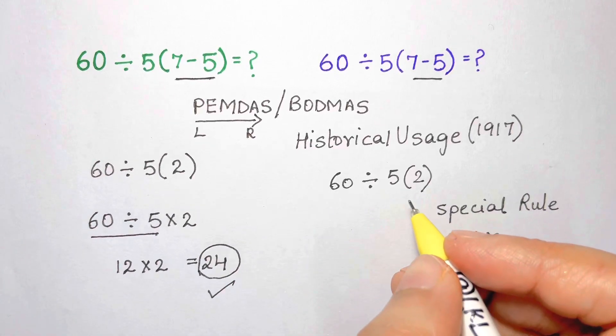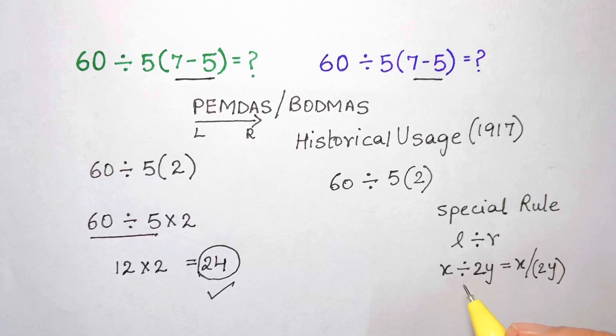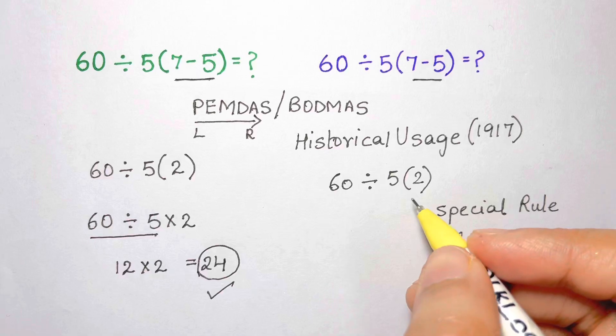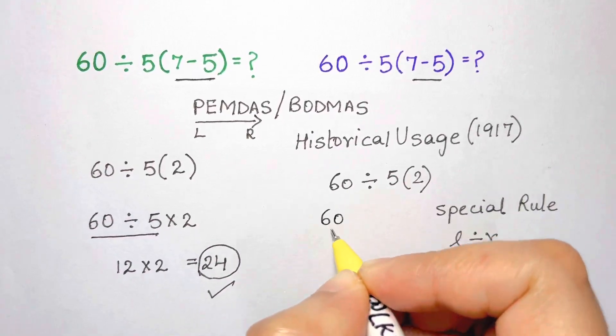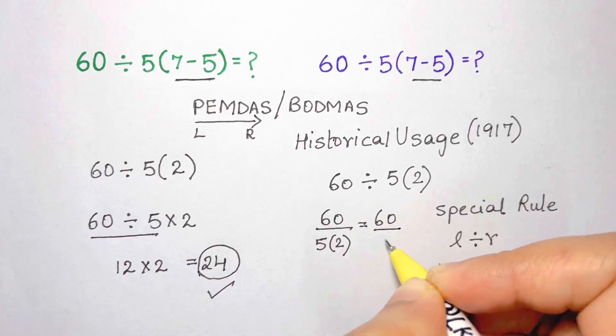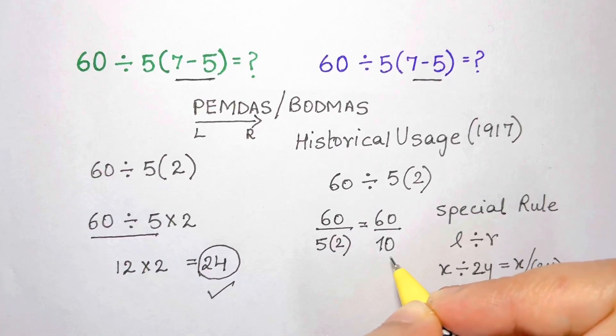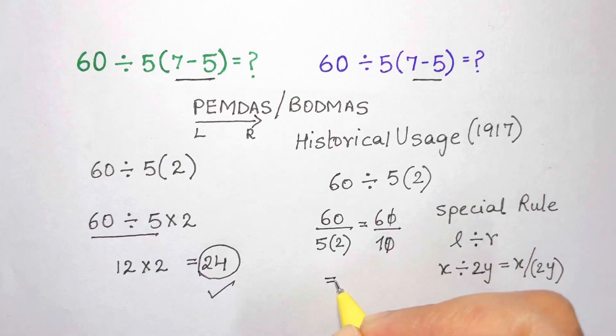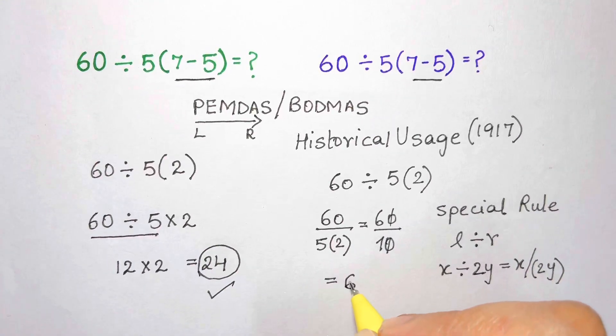If we use this special rule, we would then need to take 60 and divide by 5 times 2. So we take 60 on the left and 5 times 2 on the right and form a fraction as follows. We then evaluate 5 times 2 as being equal to 10, then we take 60 divided by 10 and get to the answer of 6.